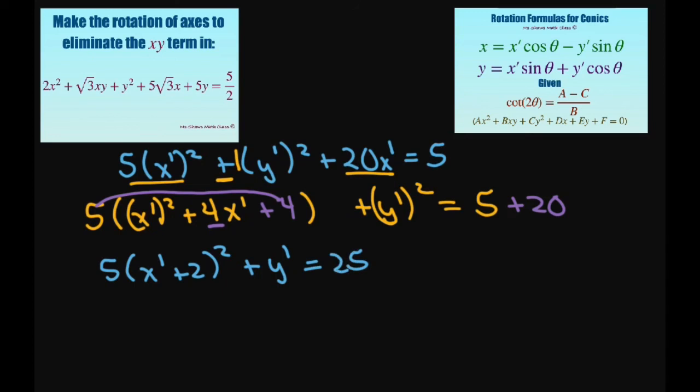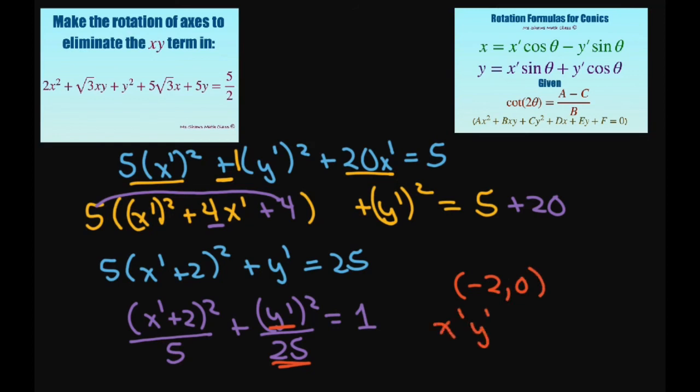And then if you divide each term by 25 we're going to get x prime plus 2 squared divided by 5 plus y prime squared divided by 25 equals 1. So this is an equation of the vertical ellipse, because our bigger number is under the y, with the center of negative 2 comma 0, and this is in the x prime y prime system.